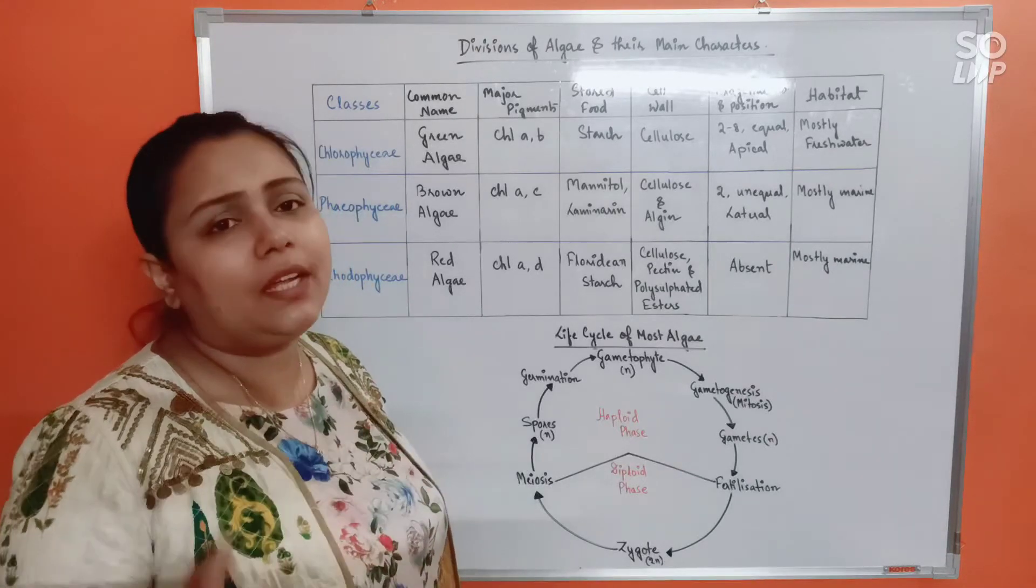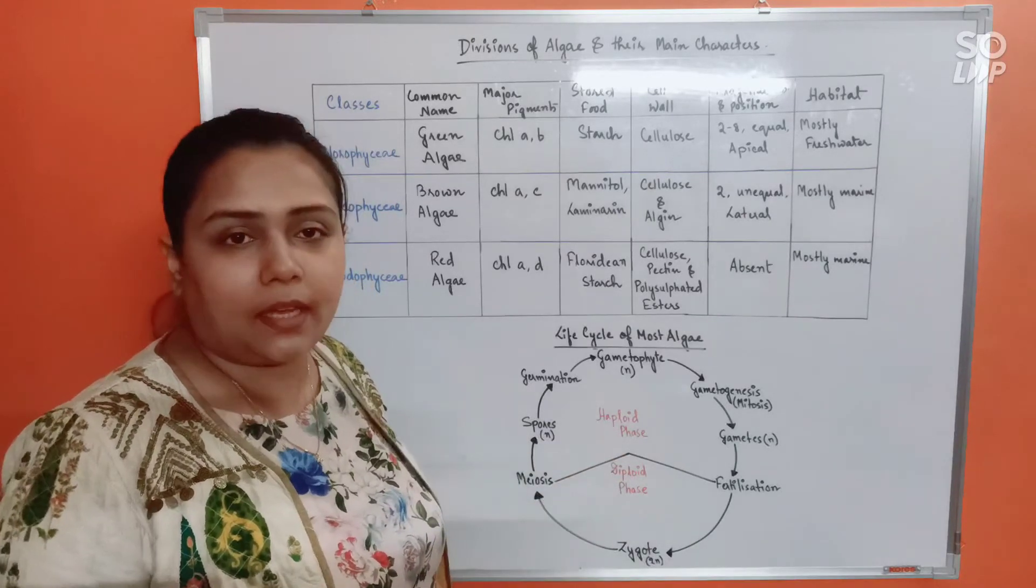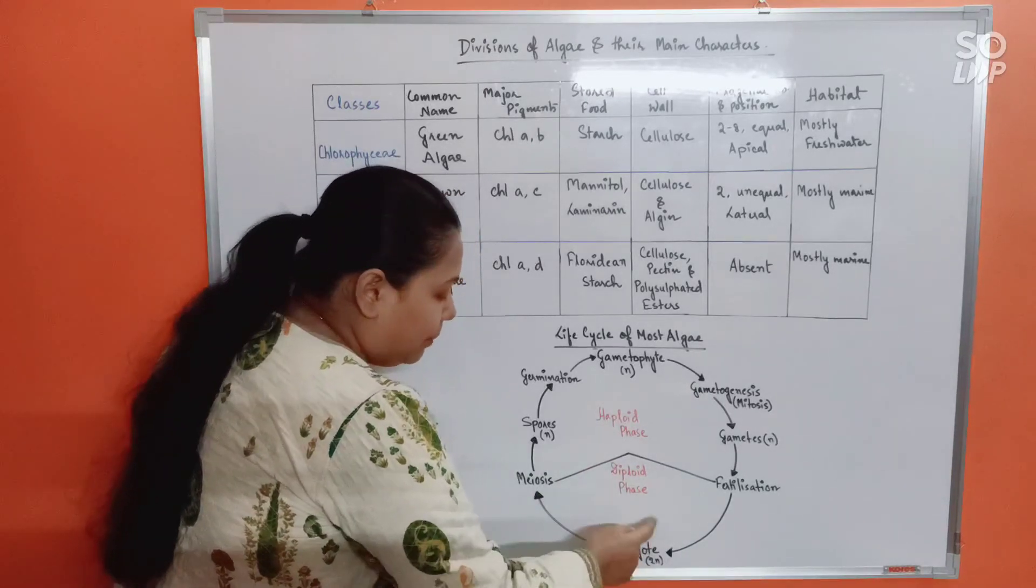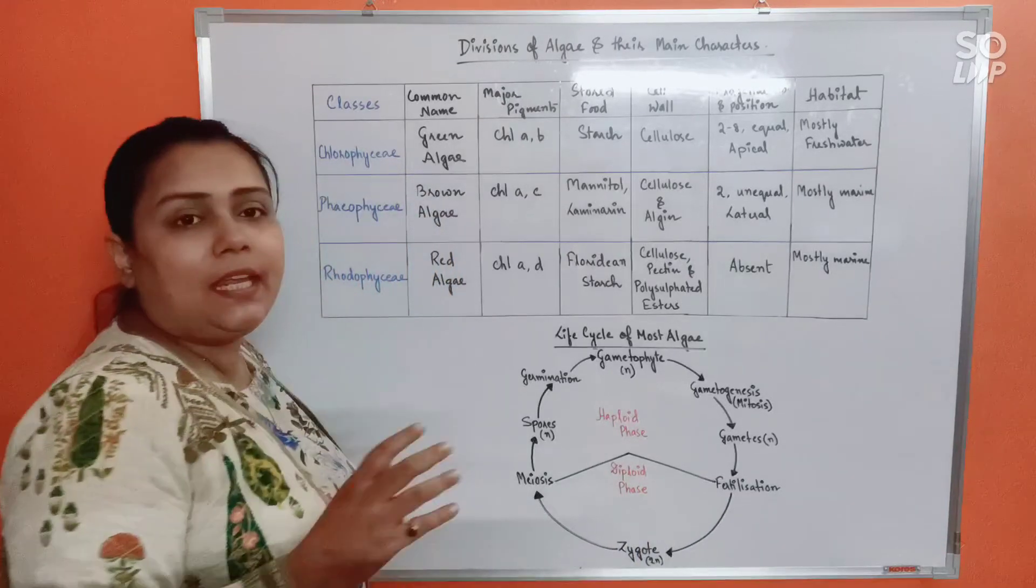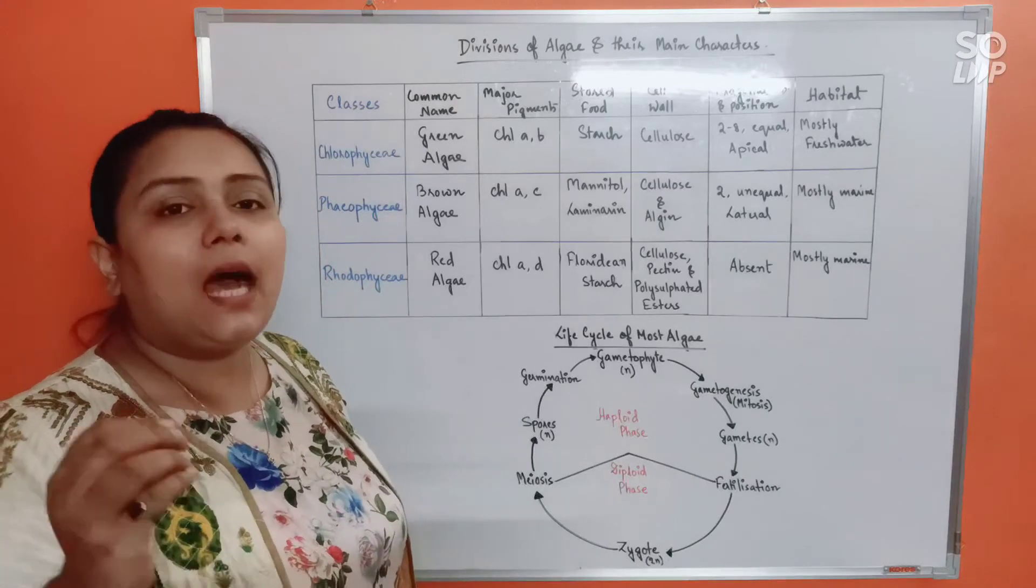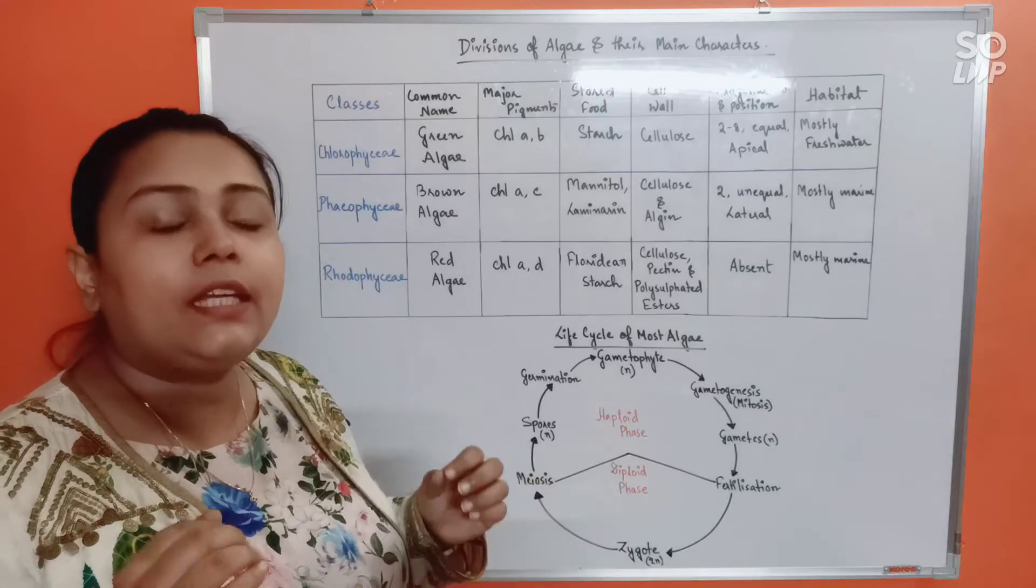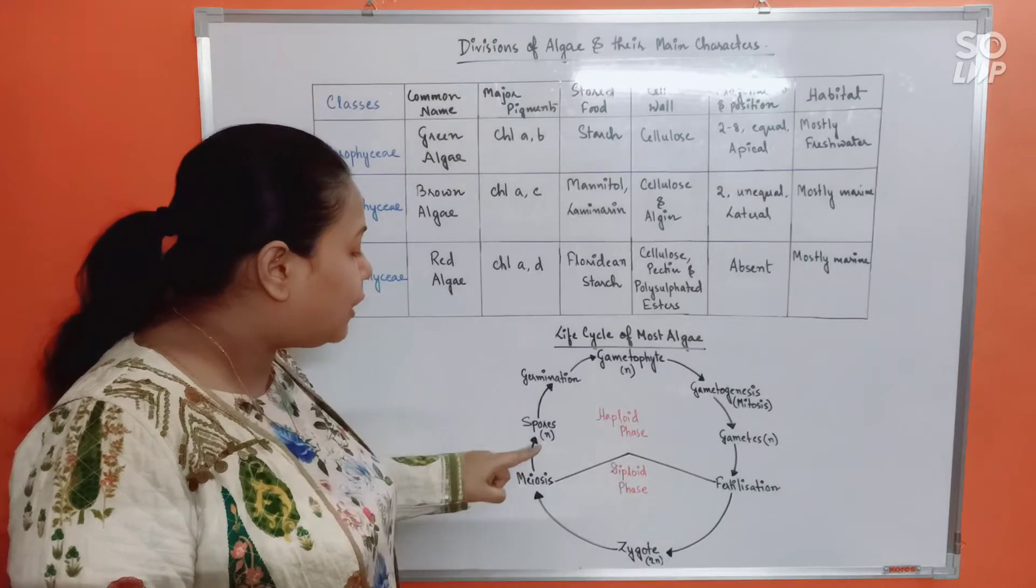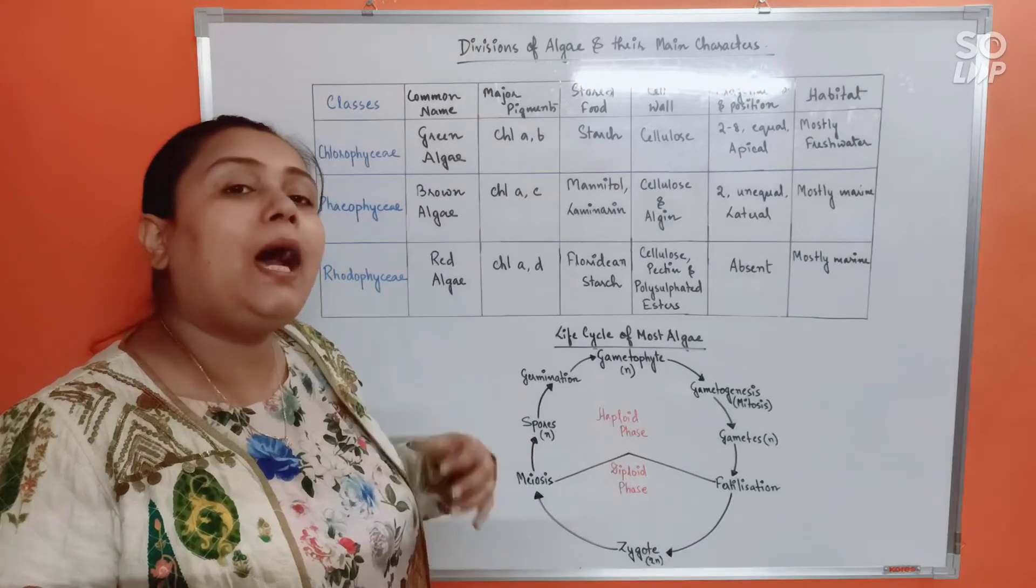Otherwise, every other cell, every other phase is haploid. That's why haplontic life cycle. Zygote being diploid 2n, now zygote immediately after formation will undergo meiosis. In any kind of organism, when you see that immediately after zygote formation it undergoes meiosis, it does not grow up to become a sporophyte, it does not grow up and become anything, it simply undergoes meiosis to get back to the haploid state. Meiosis means reduction division.